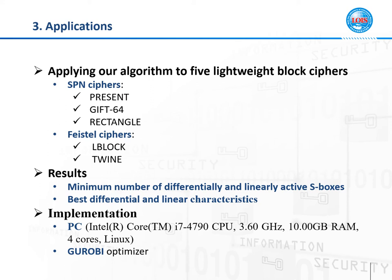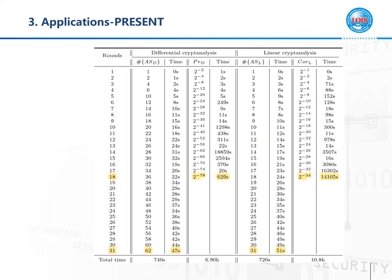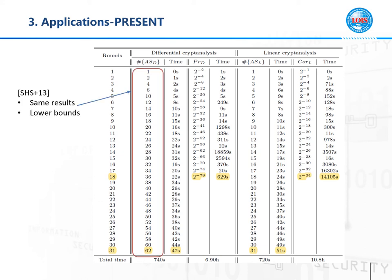We apply our search algorithm to 3 SPN ciphers and 2 Feistel ciphers. For each of the 5 ciphers, we obtain the minimum number of differentially and linearly active S-boxes and best differential and linear characteristics. Our experiments are performed on a PC using the openly available software Gurobi to solve MILP models. For PRESENT, we respectively reach up to 31, 18, 31, and 18 rounds for the four kinds of experiments. Our results on the minimum number of differentially active S-boxes are the same as in previous work, but where those were claimed to be lower bounds, we found they are exact values.